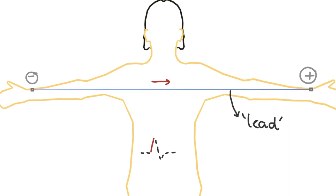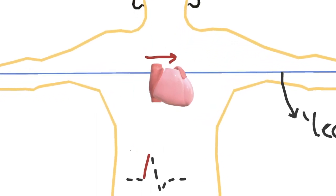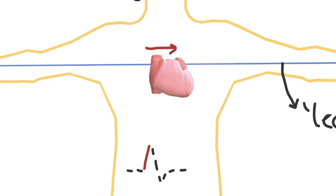Remembering that our heart's oriented here in the body like this, so if current was heading in this direction, the resulting ECG trace would look like this. This is a positive deflection. And the magnitude of this deflection is indicative of the amount of heart tissue that's depolarizing in that moment. So this arrow growing longer here is representing how much tissue is being depolarized in this direction.